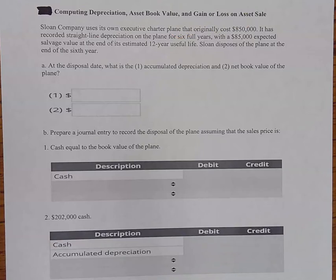So let's look here and see what we have and we'll work through this. This will take us a little bit of time. Sloan Company uses its own executive charter plane that originally cost $850,000. And we're not being asked to come up with all the components of this $850,000. That's just what the total cost of the asset was.